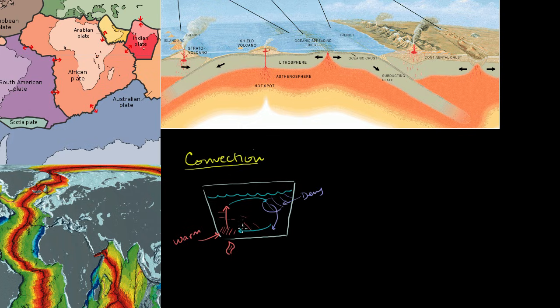And so this process, essentially what it's doing is it's transferring the heat. It's allowing the heat to be transferred from this one spot throughout the fluid. And so we call this process, this is convection.